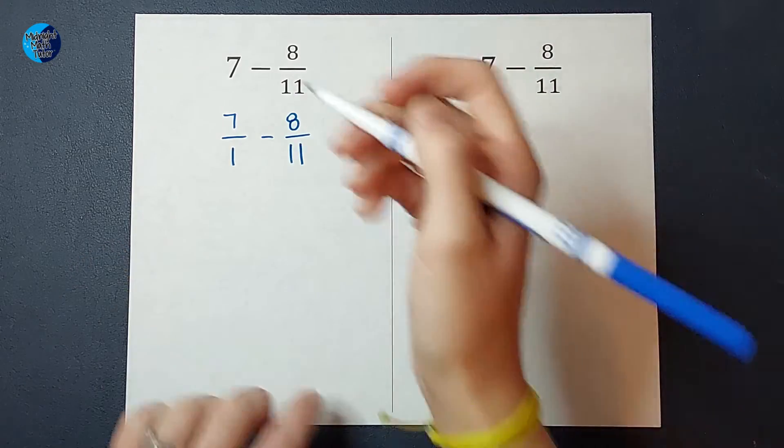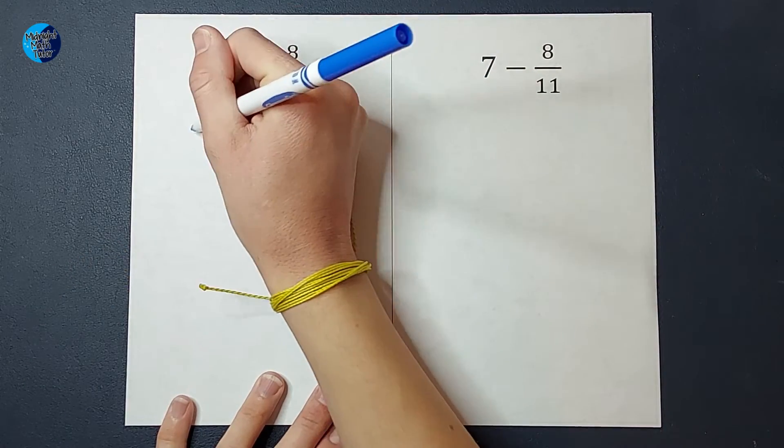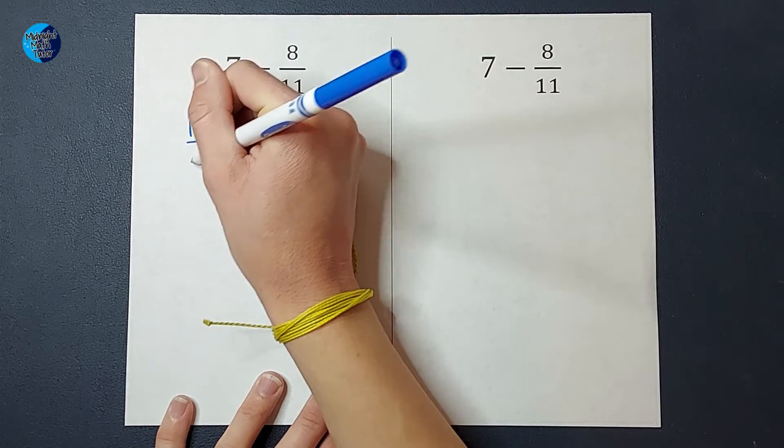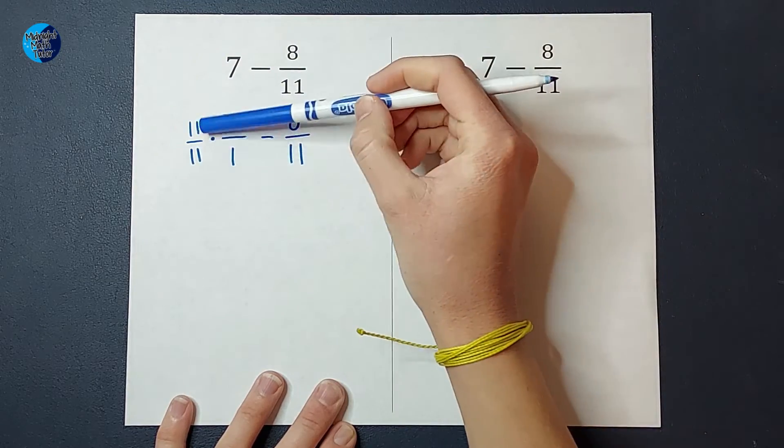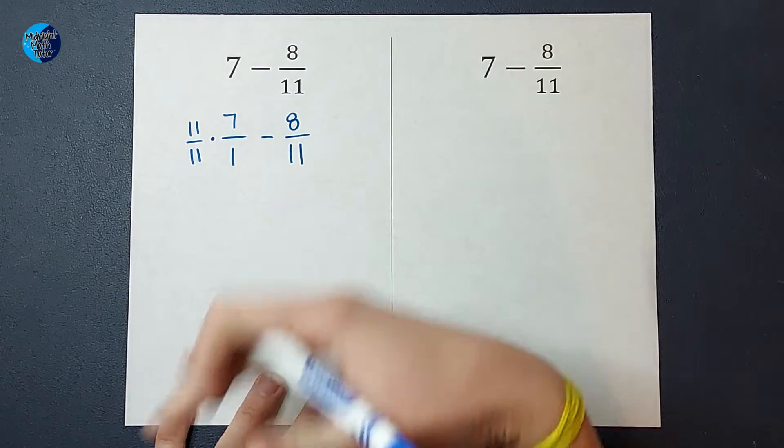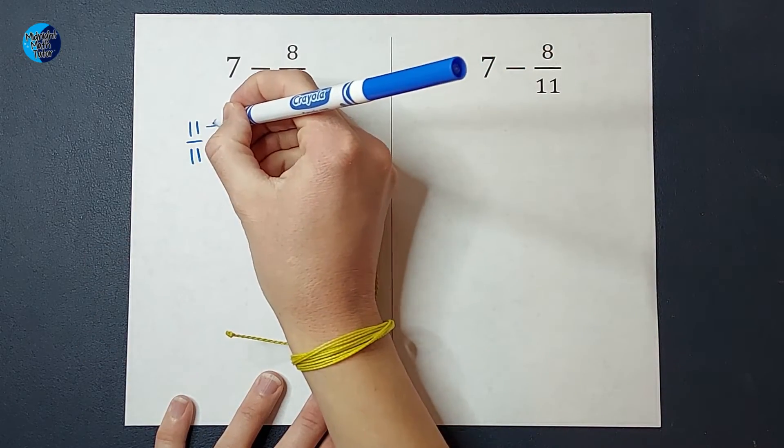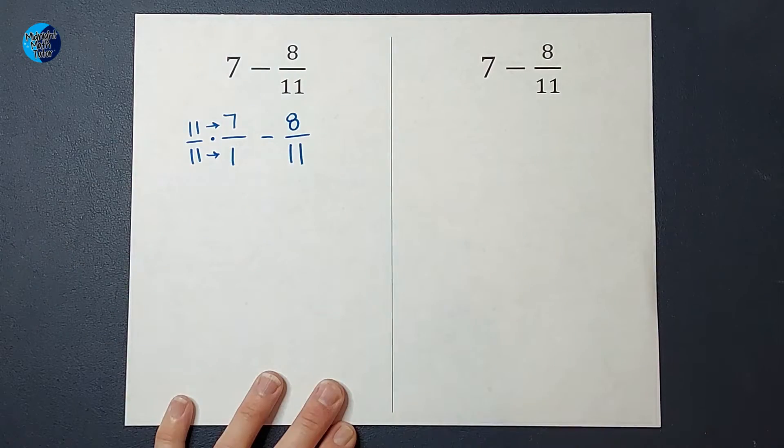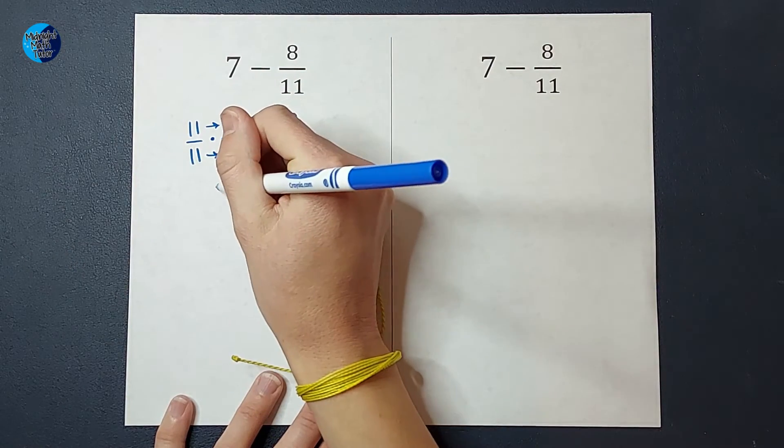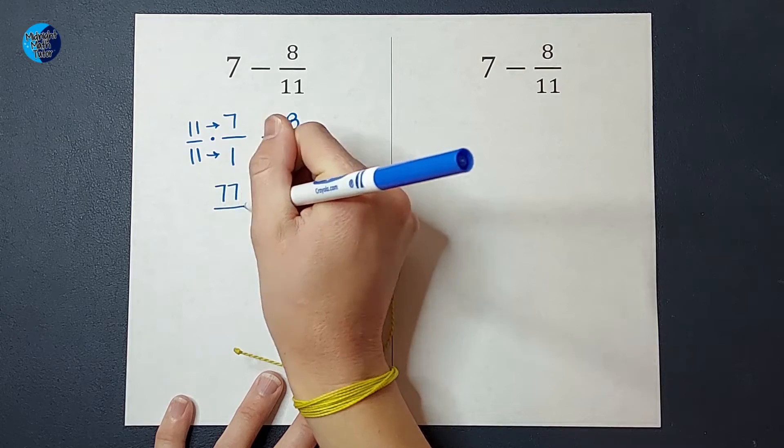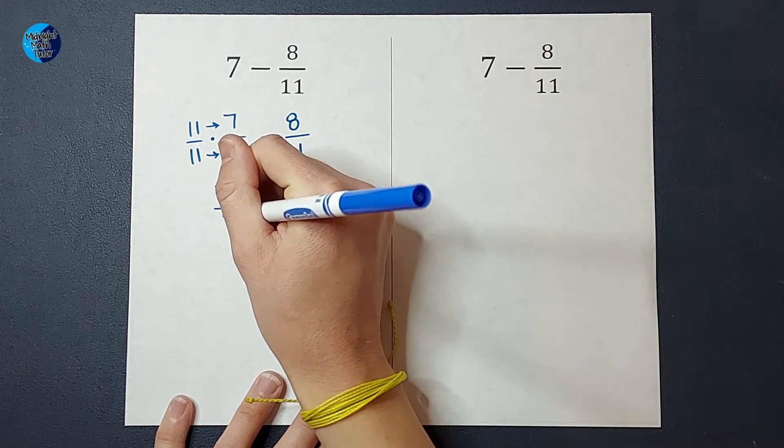So I don't need to change this guy. This side, I'm going to multiply by 11 over 11, because that just simplifies down to one if I were to divide that. So I'm really just multiplying by one. It's just a weird looking one. Then I'm going to multiply straight across. So I have 11 times seven, which gives me 77, over 11 times one, which is 11.